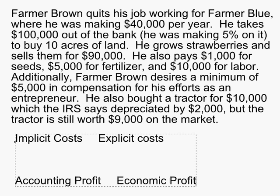Suppose Farmer Brown quits his job working for Farmer Blue where he was making forty thousand dollars per year. He takes a hundred thousand dollars out of the bank — he was making five percent interest on that money before he withdrew it — and he buys ten acres of land. Suppose he grows strawberries and sells them for ninety thousand dollars.